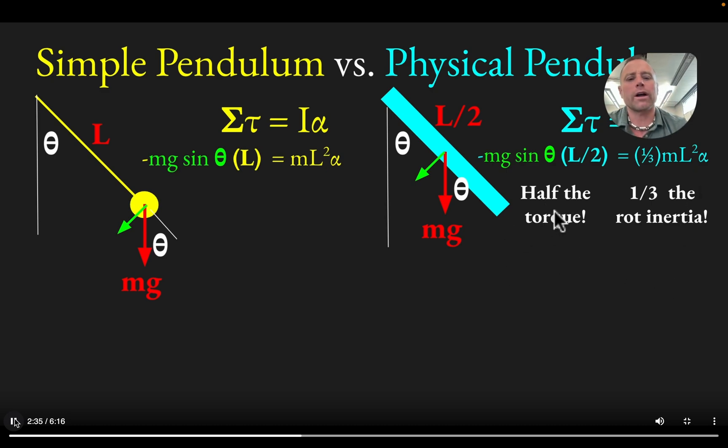So if you have half the torque, twisting something with only half the torque would tend to make it not want to rotate as quickly. More than making up for that is the fact that on the physical pendulum, it has only one third the moment of inertia. So that's something that would make it easier to change its rotational motion or to give it an angular acceleration.